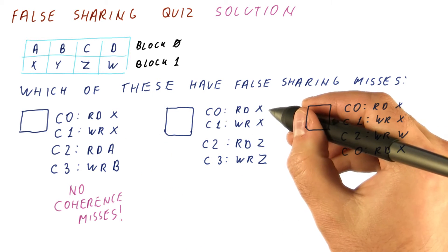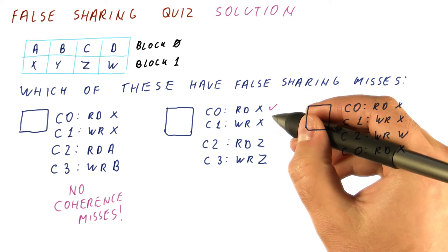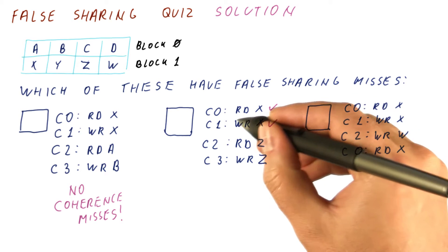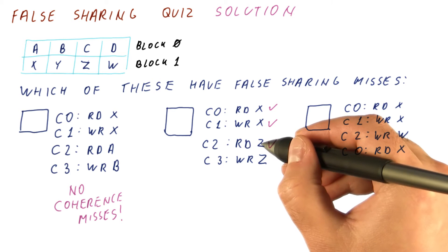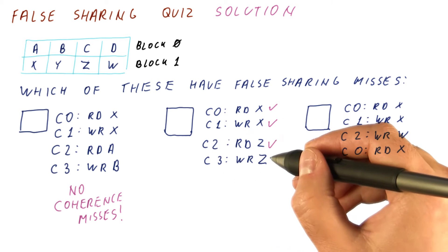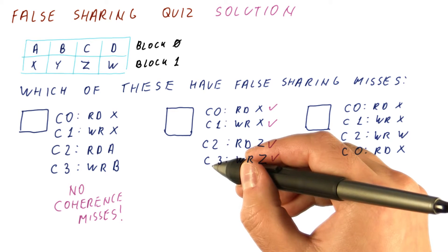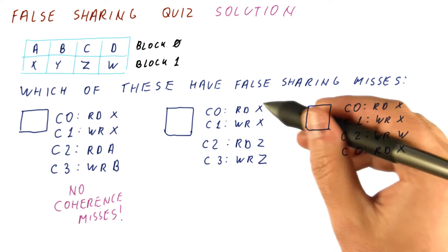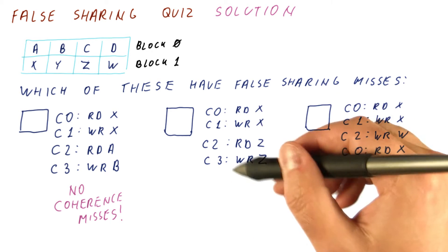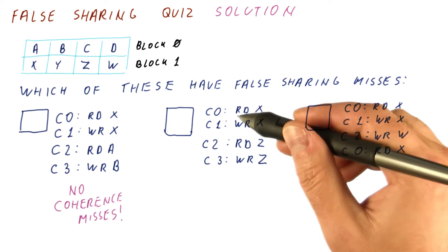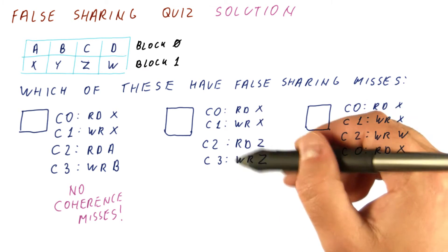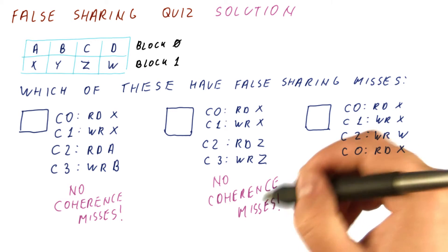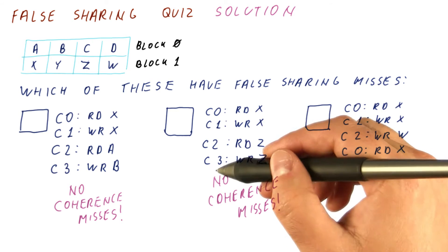Now let's look here. This is a compulsory miss for C0. This is a compulsory miss for C1. This is a compulsory miss for C2. And this is a compulsory miss for C3. So regardless whether we had coherence or not, these four accesses would be misses because each of these caches needs to fetch the block for the first time. So there are no coherence misses in this sequence either.